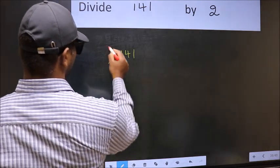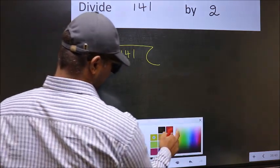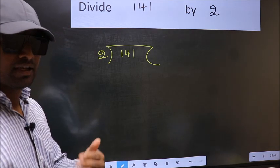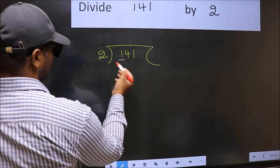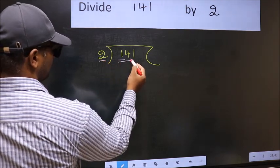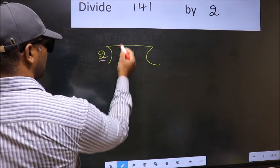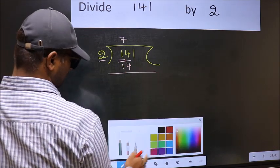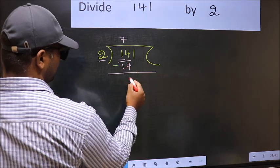141. 2 here. This is your step 1. Next, here we have 1 and here 2. 1 is smaller than 2, so we take 2 numbers: 14. When do we get 14 in 2 table? 2 times 7 is 14. Now you should subtract. 14 minus 14, 0.